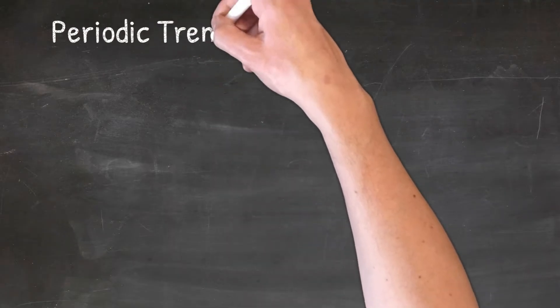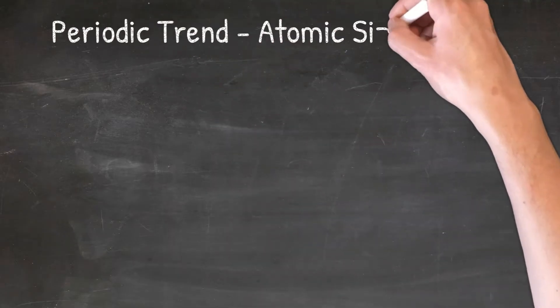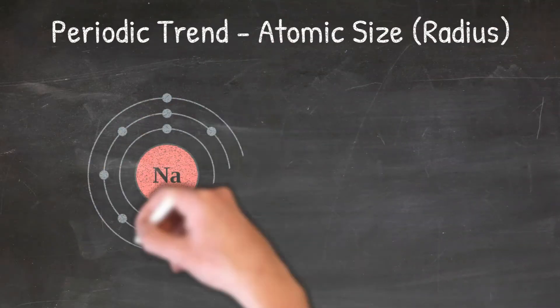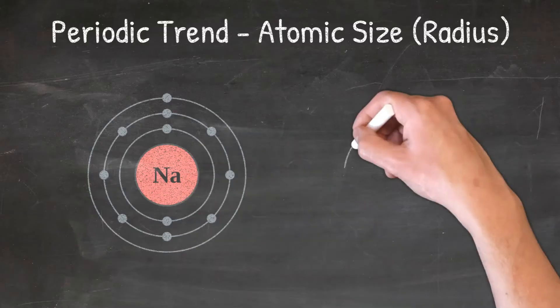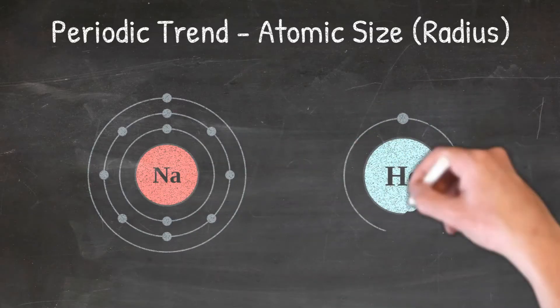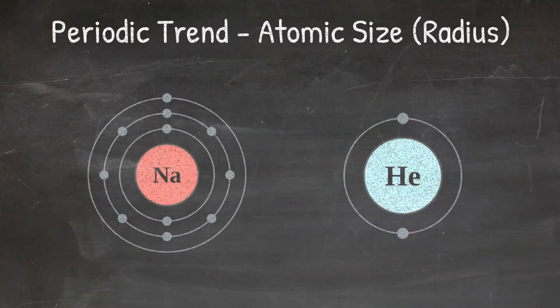In this video, we're going to look at the periodic trend for atomic size. Make sure you stick around until the very end so you do not miss out on understanding what affects atomic size the most. This is sometimes referred to as atomic radius, as there is a direct relationship between the radius of a circle and the size of a circle.